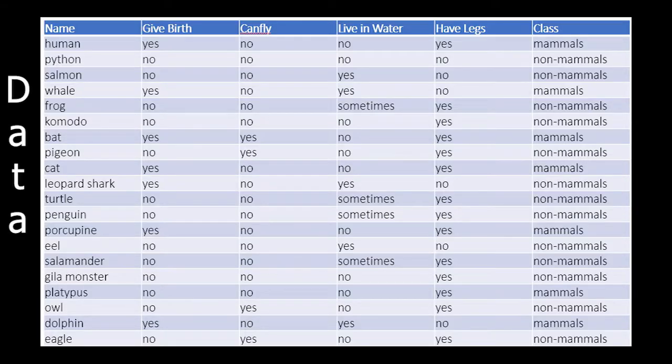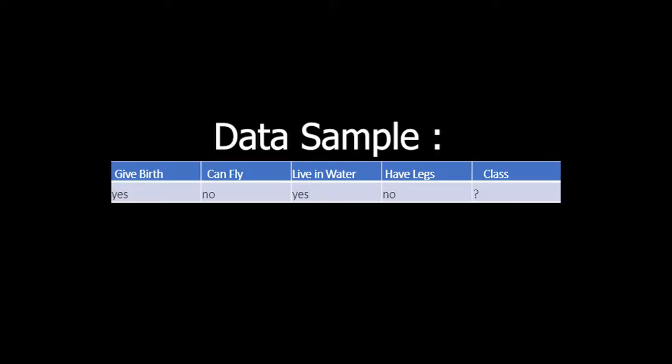Here we have 6 classes: name, give birth, can fly, live in water, have legs, and class. Here is the data sample in which we have 5 attributes given. Give birth is yes, can fly no, live in water yes, have legs no. And for the class — mammals or not mammals — we have to find the class label.